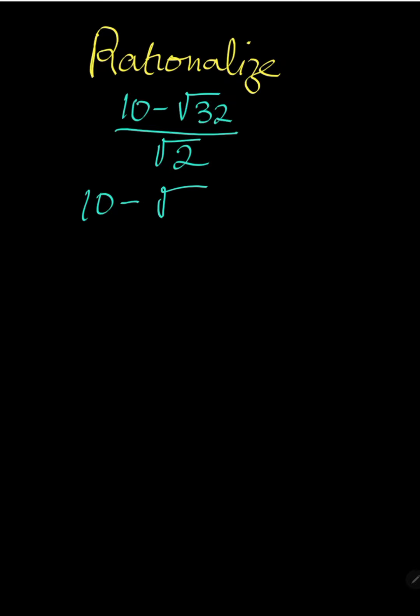That would be 10 minus √32 is the same as 16 times 2 all over √2. Now, this is equivalent to 10 minus the square root of 16 here is 4, 4√2 all over √2.